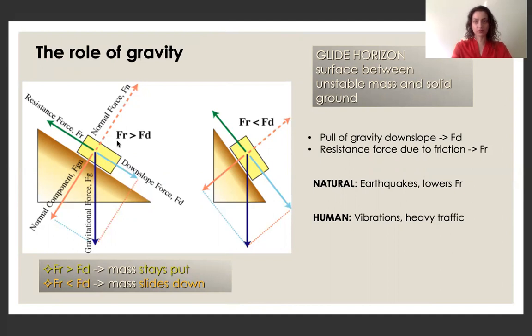So quite simply, when the resistance force is greater than the force of gravity, the mass will stay as it is. But when the force of gravity is greater than the resistance force, then the landslide will happen. And these forces can be changed by natural and human events, as we see here.